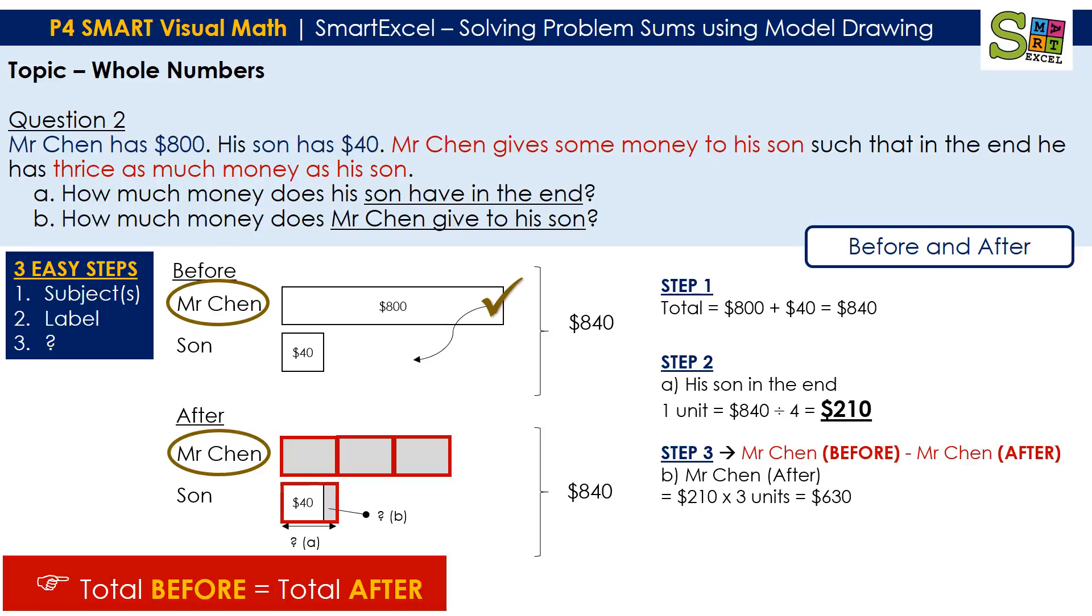Which we didn't know, but we can find out. How? By getting the 1 unit, we multiply by 3. 1 unit for the son is $210, so $210 multiplied by the 3 units is $630. And with this, we can find the 3 units.